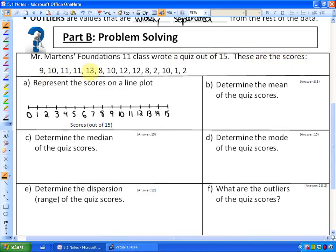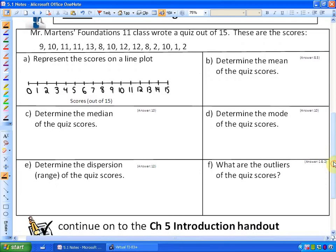9, 10, 11, 11, 13, 8, 10, 12, 12, 8, 2, 10, 1, 2—those are the scores out of 15. We are going to be doing multiple things: making a line plot, determining the mean, median, and mode, determining the range, and identifying the outliers for these statistics.